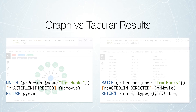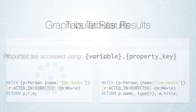Alternatively, on the right hand side, we are returning specific properties by name — so the name of the actor, or the name of the title. And you can see here indicating the name of the relationship type that connects those two. So in this case, we're returning very specific properties, and that's when we yield a tabular result.